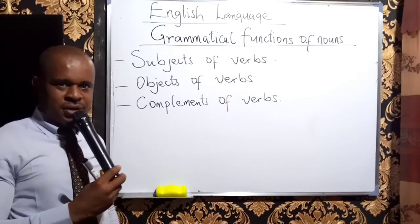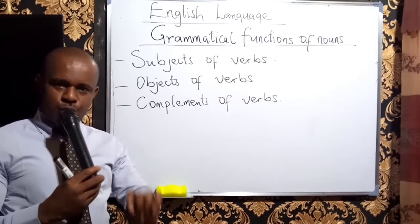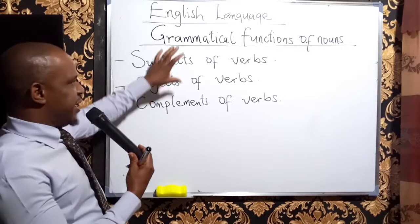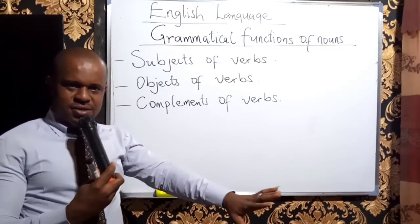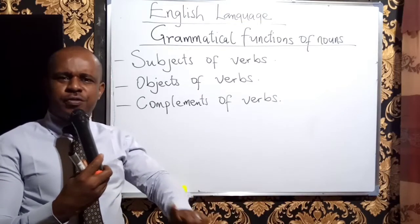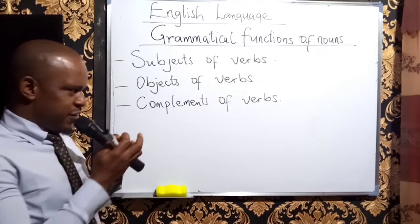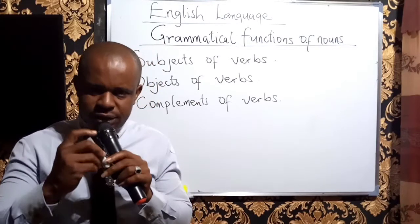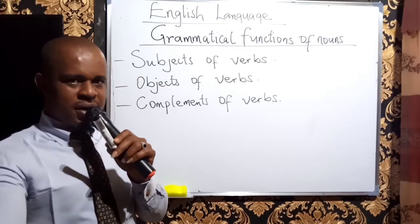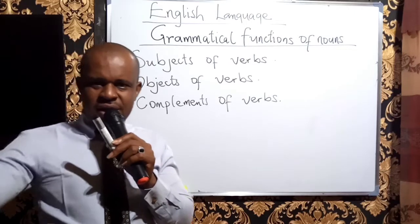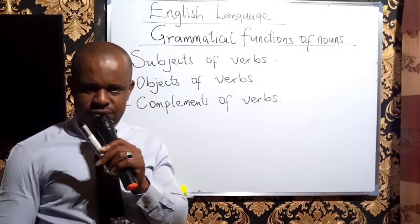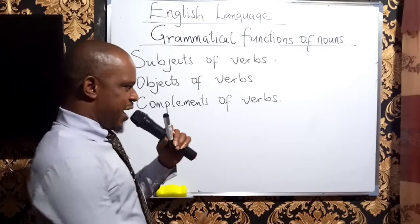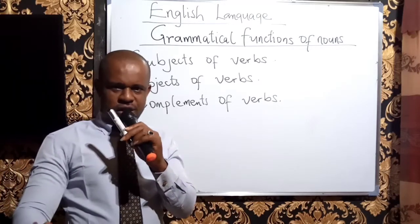The second function is objects of verbs. We defined the subject as the performer or doer of action in sentences. Now, if the subject is the doer of an action, the object is the receiver. The subject performs the action; the object suffers or receives the action.